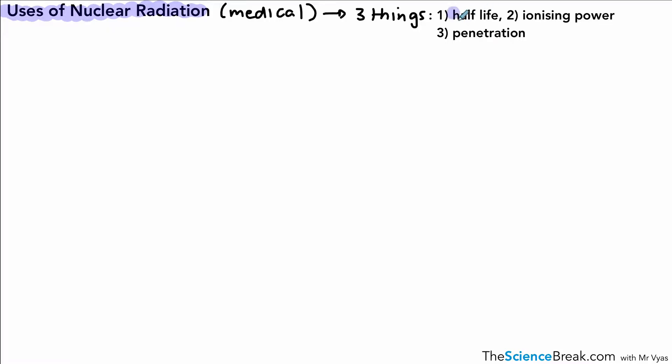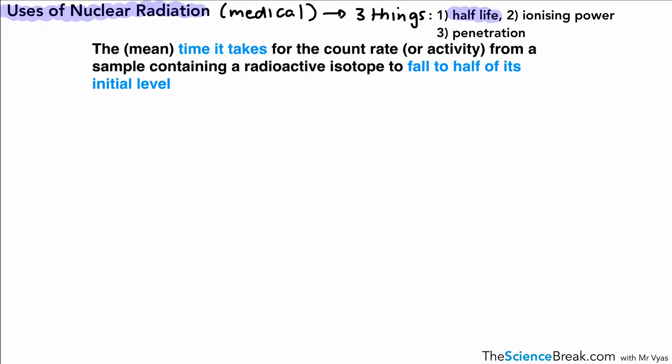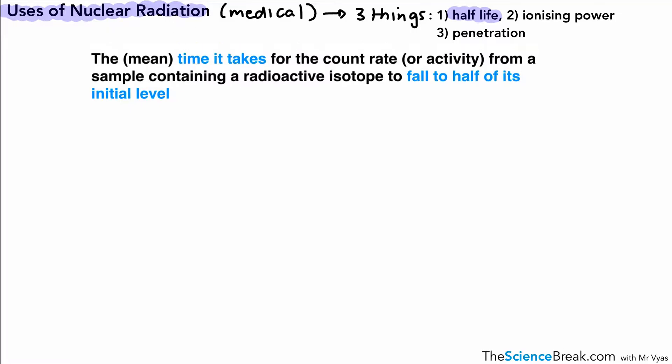The first thing we can look at is this idea of half-life. It's the mean time taken for the count rate or activity of a sample containing a radioactive isotope to fall to half of its initial level. We can simplify that and just call it the time for the radioactivity to reduce to safe levels.